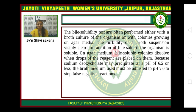The bile solubility test is often performed either with a broth culture of the organism or with a colony growing on agar medium. The turbidity of a broth suspension visibly clears on addition of bile salts if the organism is soluble. On agar medium, bile-soluble colonies dissolve when drops of the reagent are placed on them. Because sodium deoxycholate may precipitate at a pH of 6.5 or less, the broth medium used must be adjusted to a pH of 7.0 to avoid false negative reactions.